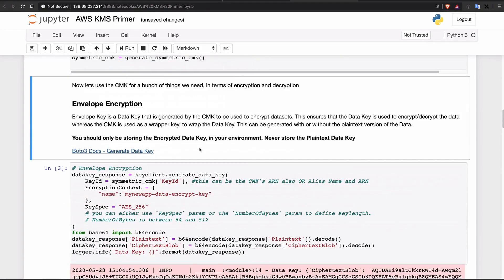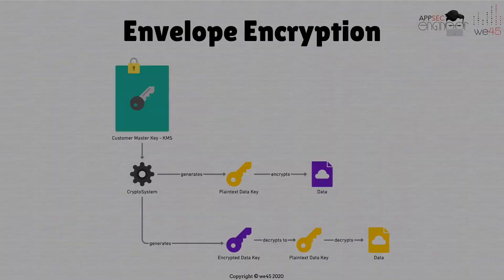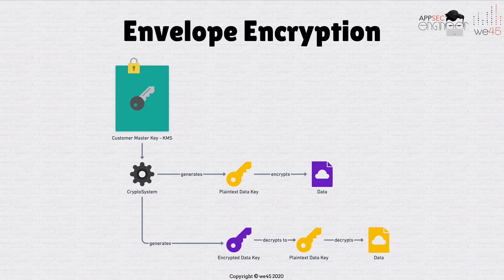Now let's look at a concept called envelope encryption. Let me explain this concept with a diagram. In any cloud provider, the master key itself should not be used to directly encrypt data. Don't directly encrypt or decrypt data with the master key — you can do it, but it only has a limit on what data size it can encrypt and decrypt.